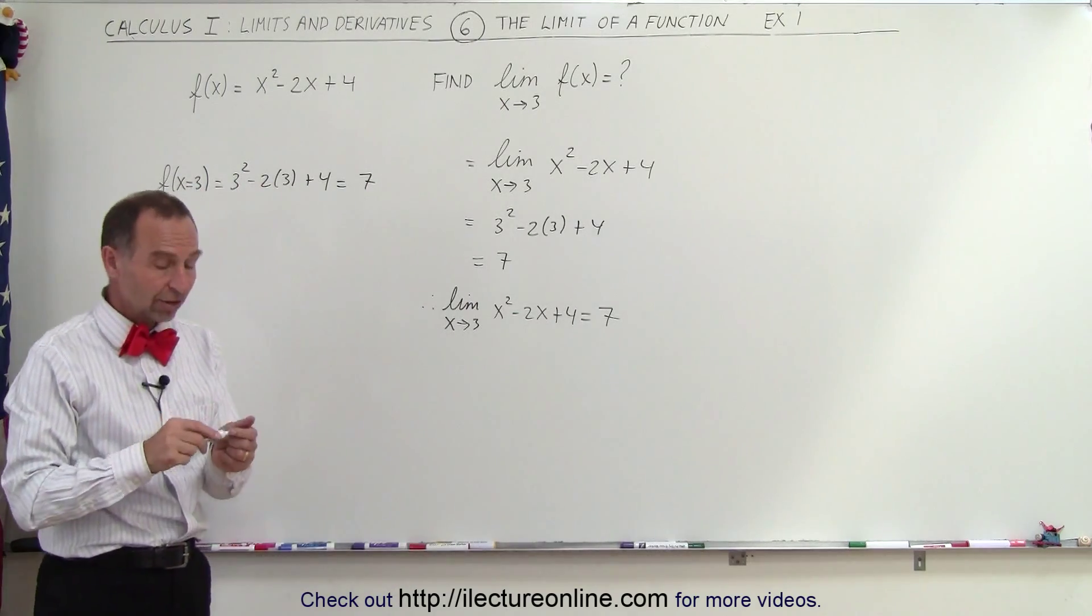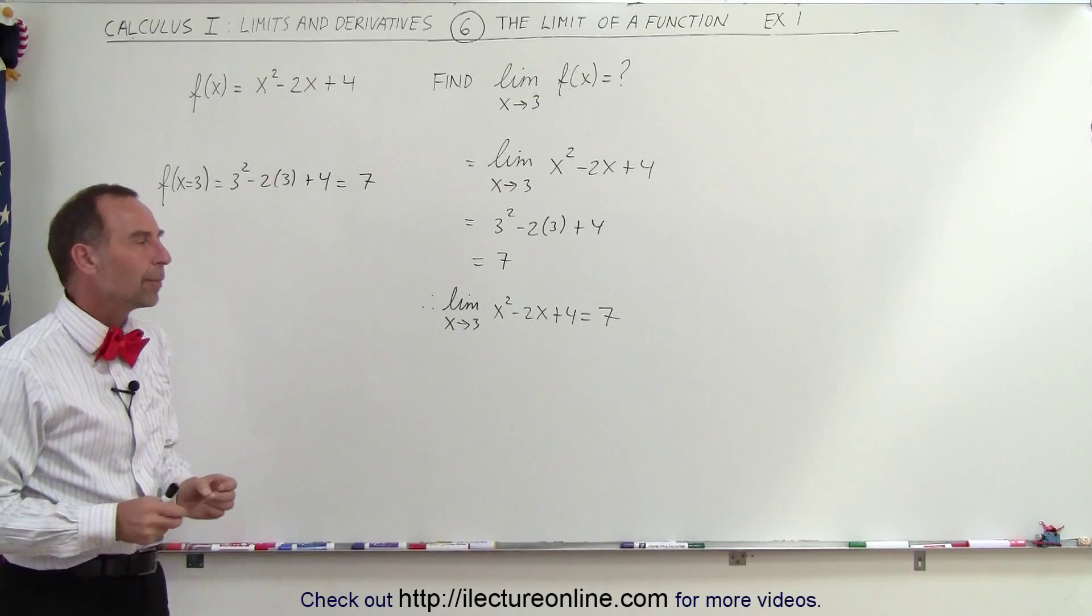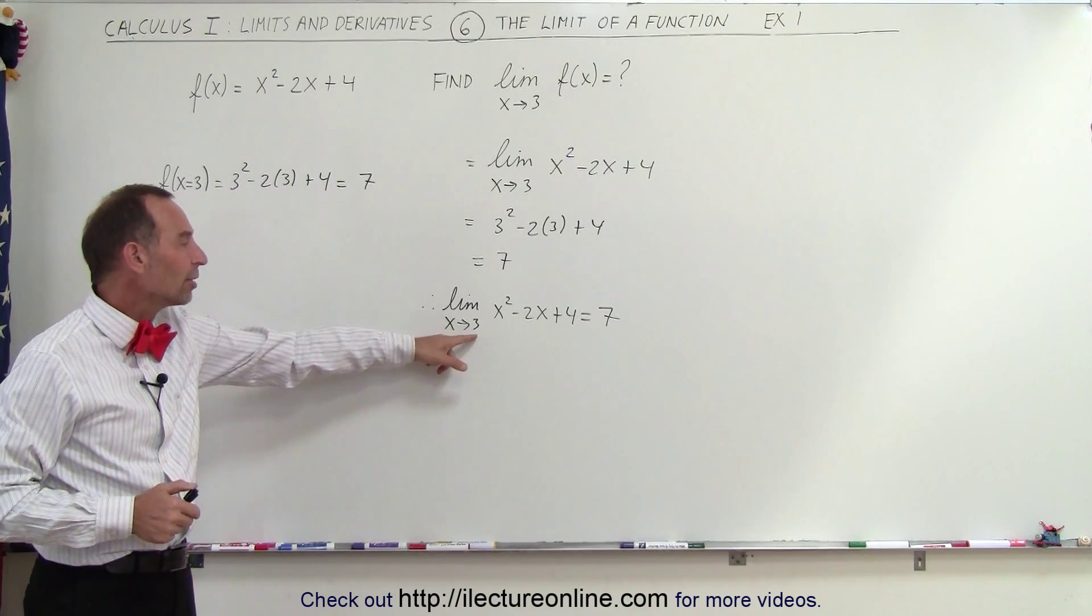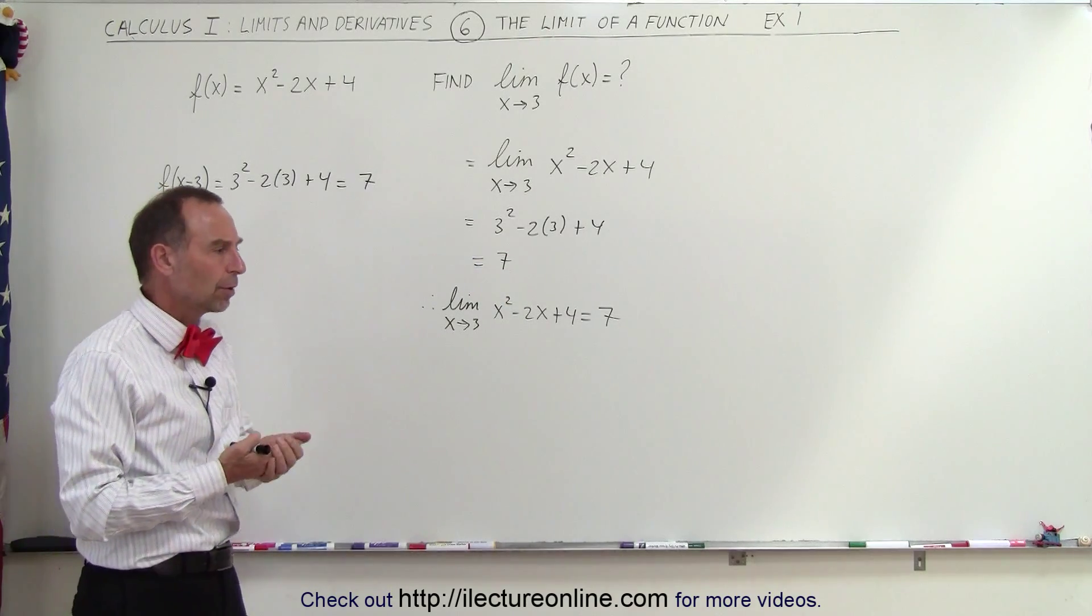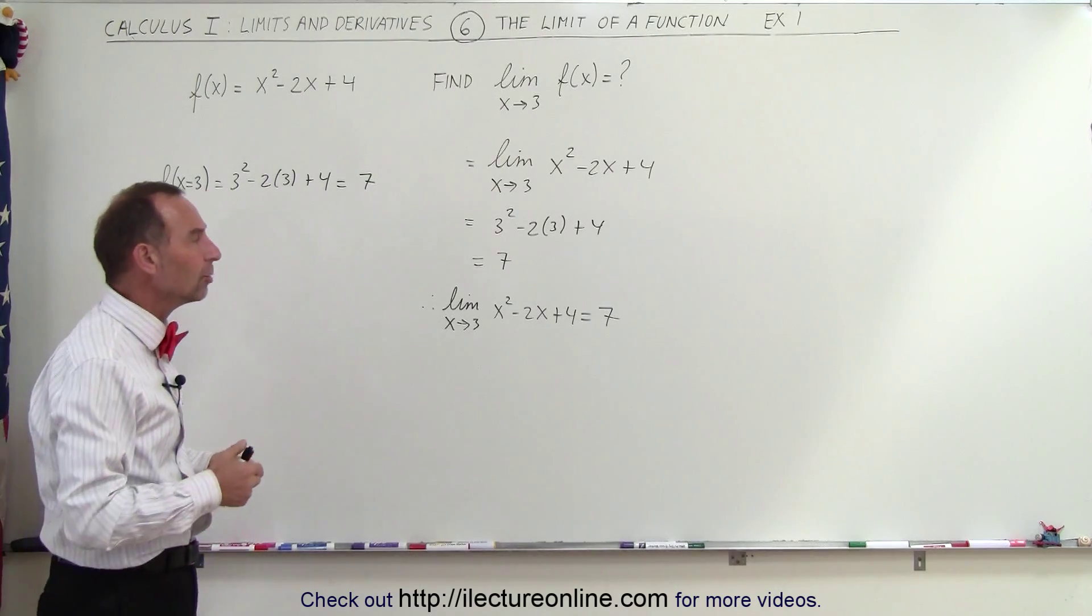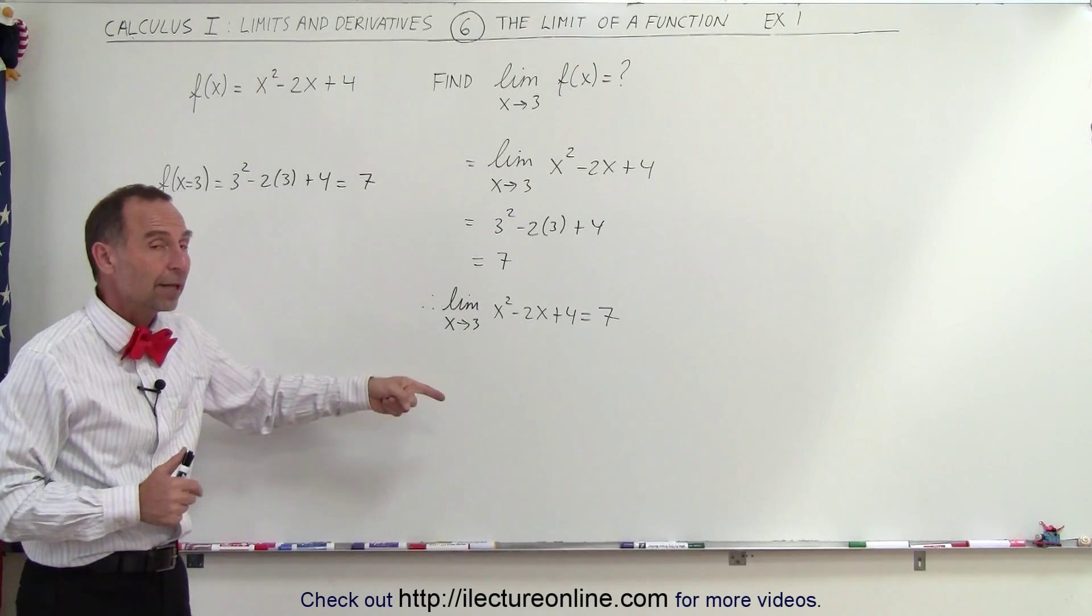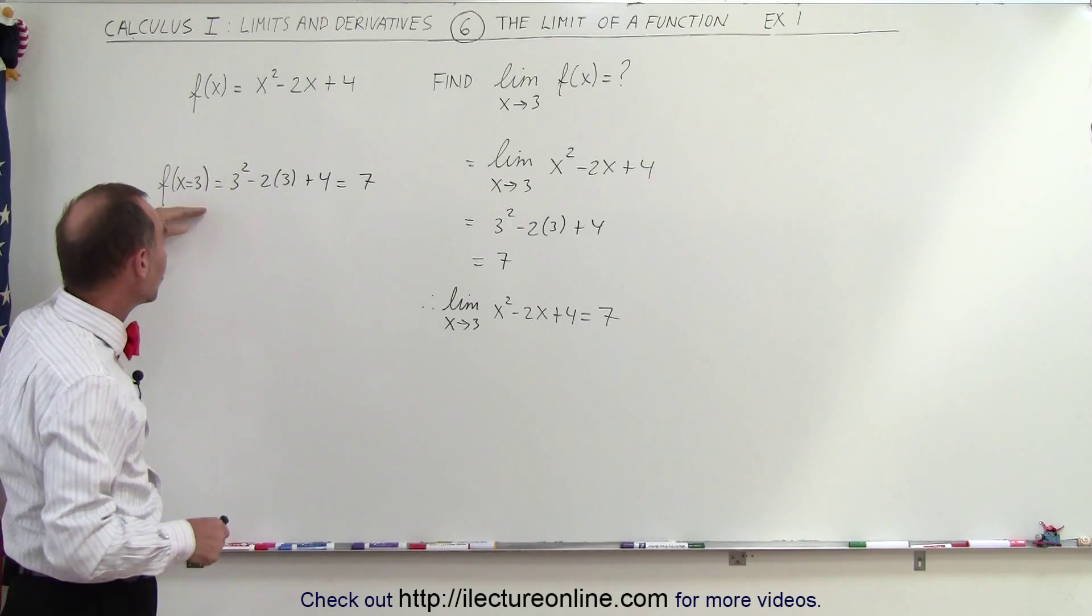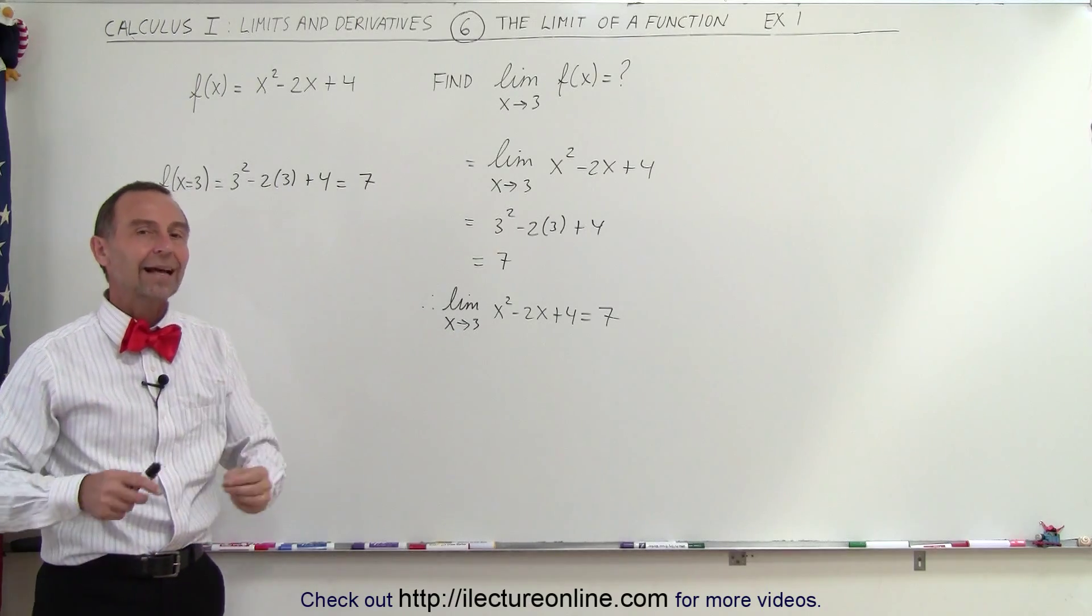Well, in this particular case, there's no difference. The approach is different, but the end result is the same. But there are plenty of occasions where we cannot simply plug in the value that x approaches into the function to get a result because then we may have, for example, a zero denominator or something that we're not allowed to calculate or we have an indeterminate ratio or a number of things that can happen. In this particular case, because it's a simple polynomial, the evaluation of the function for the value of x equals 3 and the limit as x approaches 3 is exactly the same.